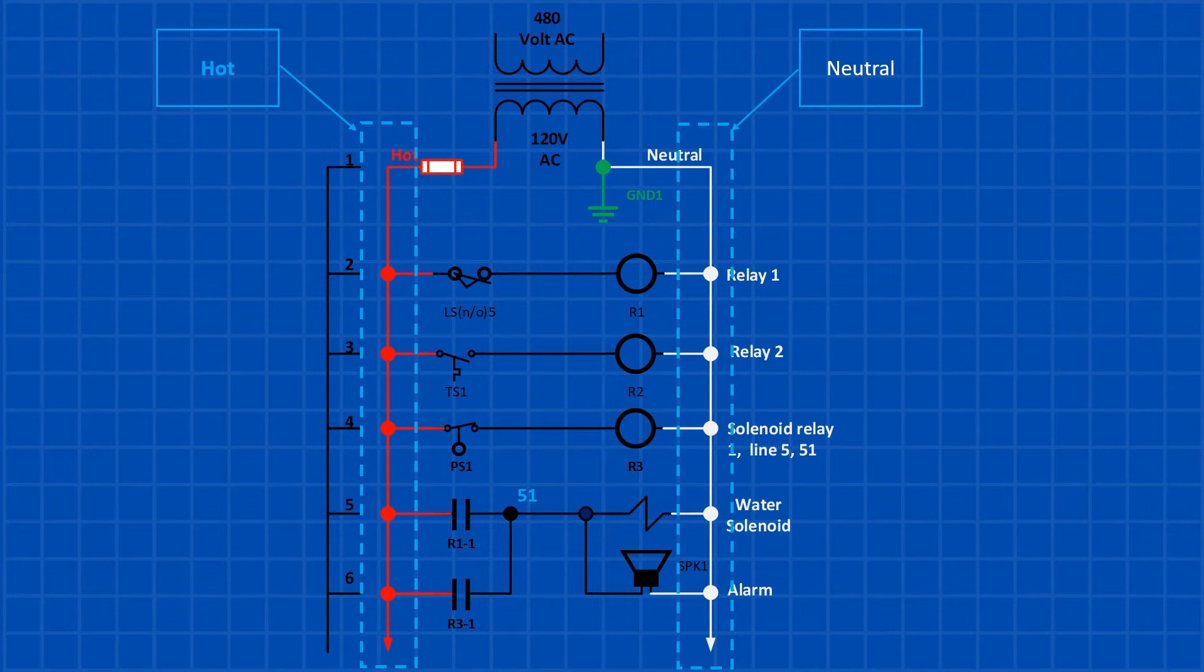Now, let's look at other important elements of the ladder diagram. Input and output devices are wired between the hot and neutral lines. Output devices always appear on the right side of the ladder diagram, with one side directly or indirectly connected to the neutral.